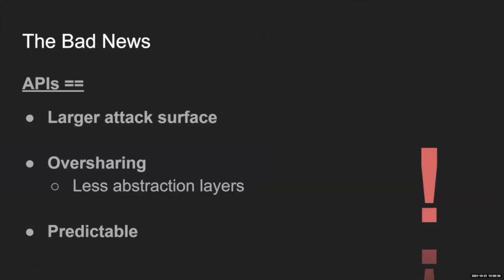The bad news is that APIs expose a much larger attack surface. Today you have many more endpoints that attackers can try to manipulate, and APIs expose much more parameters and endpoints. Every pentester will tell you that every parameter the client sends to the API is a potential place to inject something or manipulate the input.